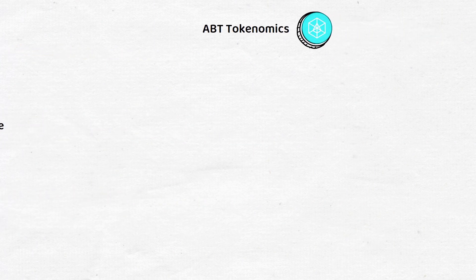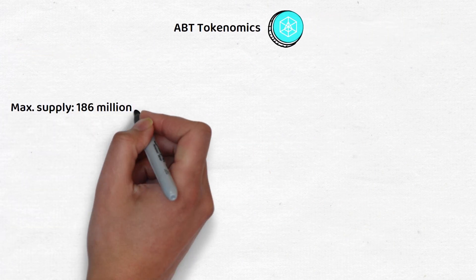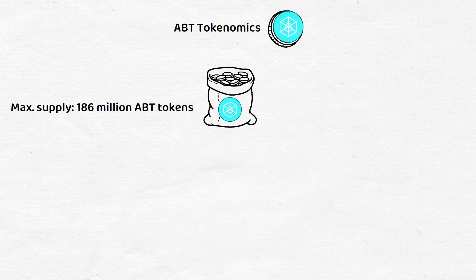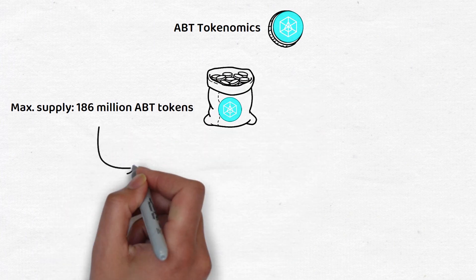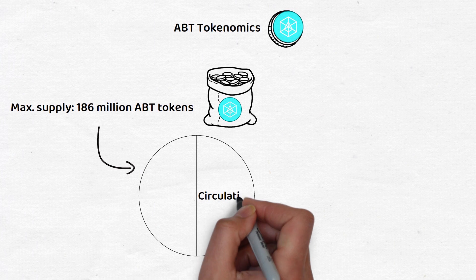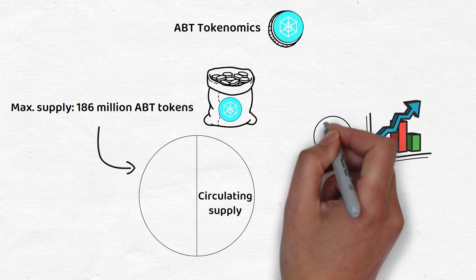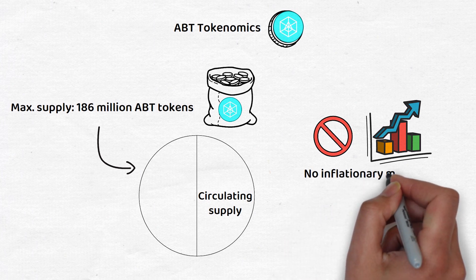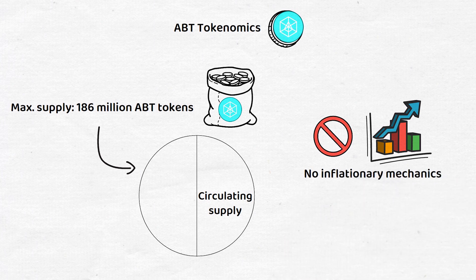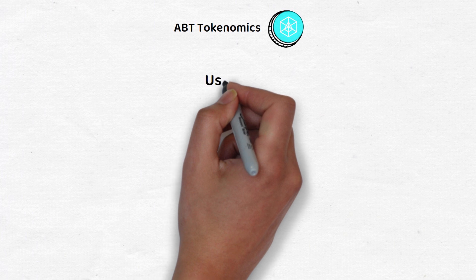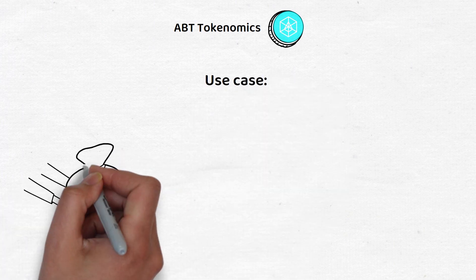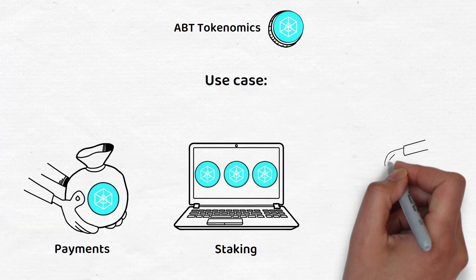In total, there will only ever be 186 million ABT tokens, with about 50% of that making up its current active circulation. Unlike other blockchains, there are no inflationary mechanics on the ArcBlock network, meaning that 186 million ABT is a hard cap. ArcBlock runs a proof-of-stake-based consensus mechanism, which means its ABT tokens can be used for payments on the network, staking, and governance.